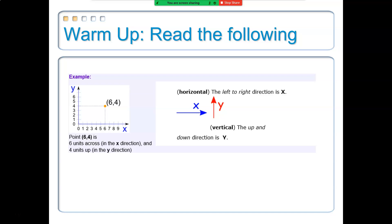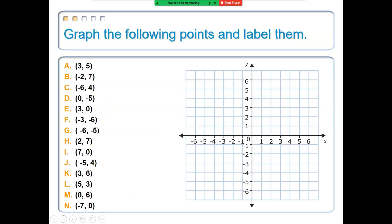Looking at the warm-up, it says to read the following: 0.64 is 6 points across in the x and 4 points up in the y. When we discuss horizontal and vertical, we are talking about across for horizontal and up and down for vertical. Go ahead and take a minute and graph and label the following points.